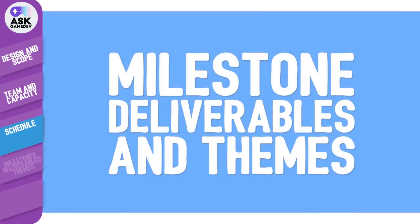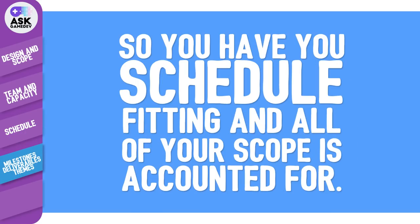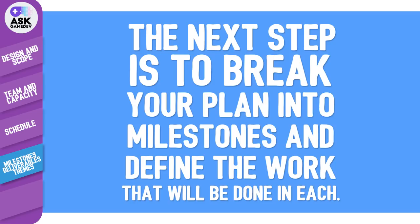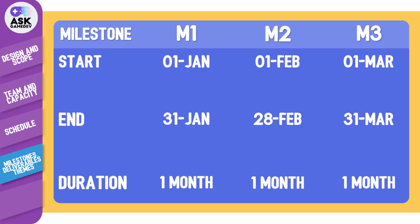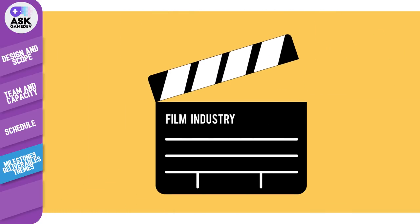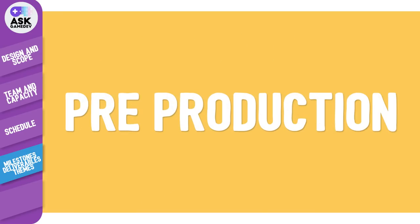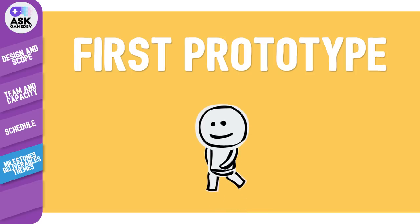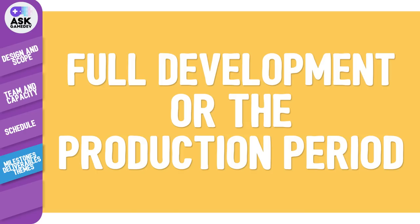Now let's talk about milestone deliverables and themes. The next step is to break your plan into milestones and define the work that will be done in each. Milestones can be any length and should be customized to your development goals, but monthly or four-week milestones seem to be common in professional studios. Milestones are typically where team leadership takes account of how they have progressed against plan and determines any changes needed to the go-forward plan.